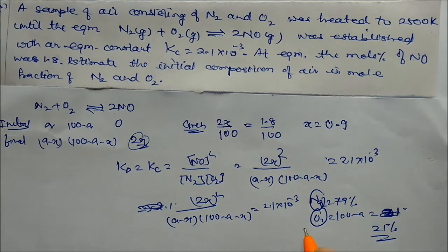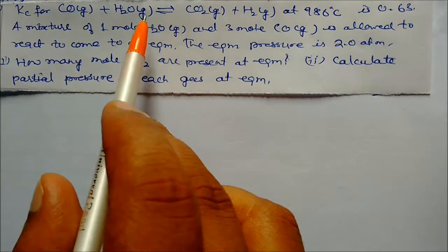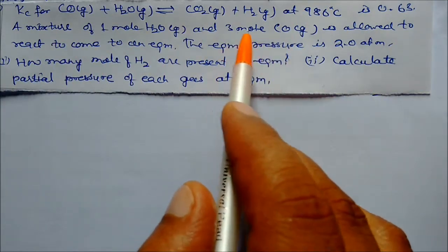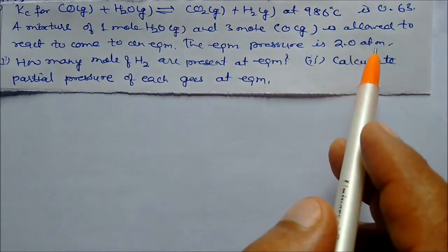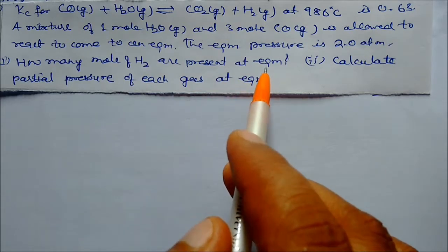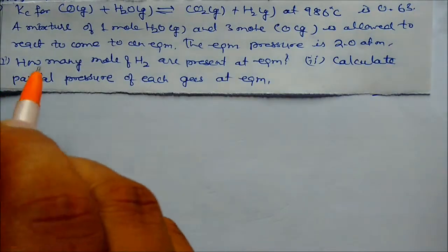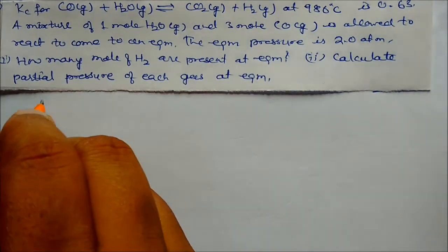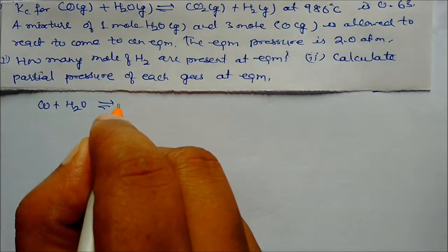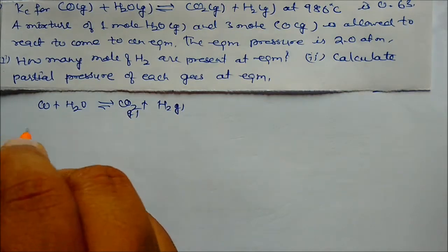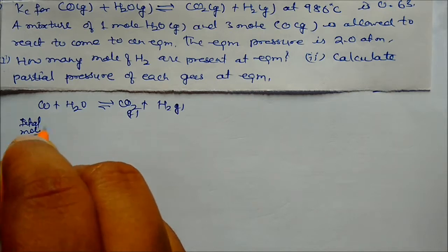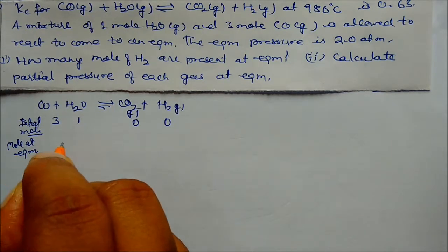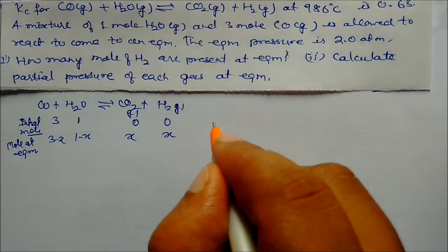Next problem: CO + H₂O ⇌ CO₂ + H₂, with Kc = 0.63 at 986°C. A mixture of 1 mol water and 3 mol CO is allowed to react to equilibrium at total pressure 2 atm. We need to find moles of hydrogen at equilibrium and calculate partial pressures.